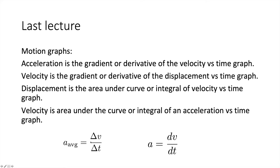The average acceleration is given by the change in velocity divided by the time over which that change occurs. The instantaneous acceleration is just the derivative of the velocity at that time.